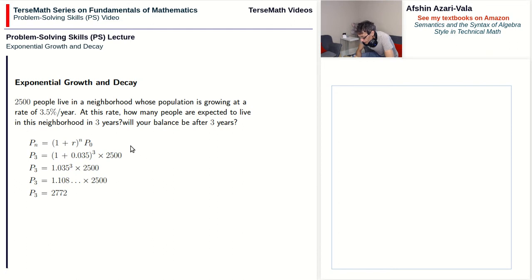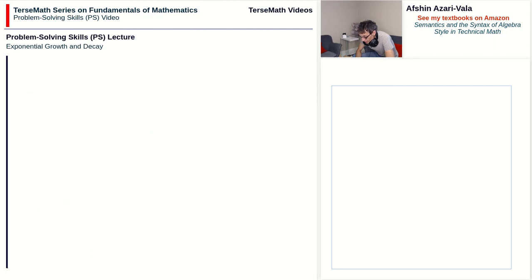We put down the formula — (1 + r)ⁿ × p₀ — with the rate of 3.5 percent, seeking the population after three years, and an initial population of two thousand five hundred people. Thank you very much for watching this video. In the next video I will take up the topic of radiation.